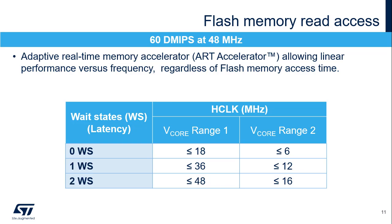In order to read the flash memory, it is required to configure the number of wait states to be inserted in a read access depending on the clock frequency. The number of wait states also depends on the voltage scaling range. In range 1, the flash memory can be accessed up to 48 MHz with 2 wait states, and with 0 wait states up to 18 MHz. For range 2, it is up to 16 MHz with 2 wait states.